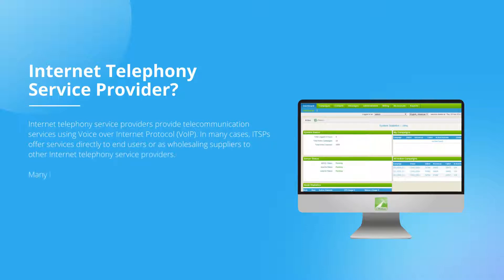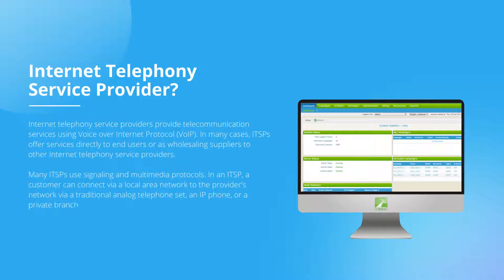Many ITSPs use signaling and multimedia protocols. In an ITSP, a customer can connect via a local area network to the provider's network via a traditional analog telephone set, an IP phone, or a private branch exchange system via a media gateway to the provider's network.